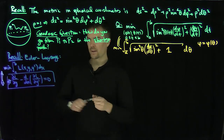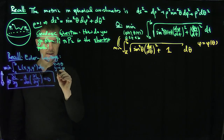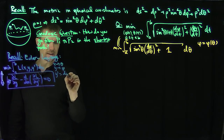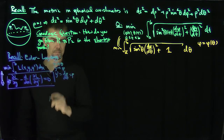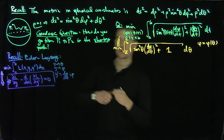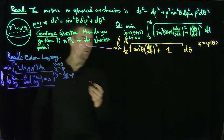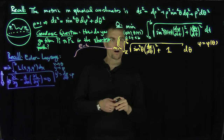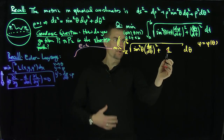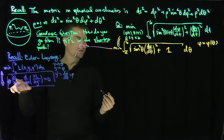In our problem, x is really θ, y is really φ, and y' is really dφ/dθ. I'll use the letter p for that — a traditional notation for derivatives. Our Lagrangian function is L = √(1 + sin²θ · p²), where there's no explicit φ dependence — only dφ/dθ.